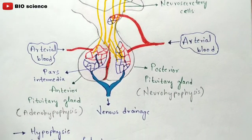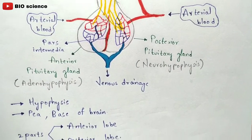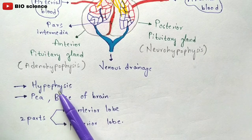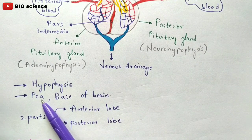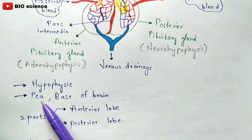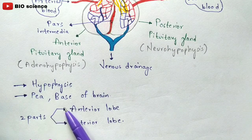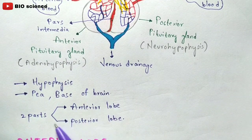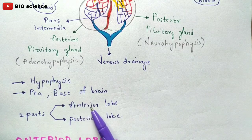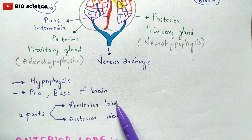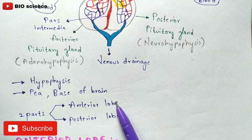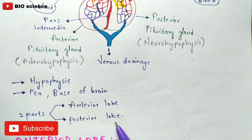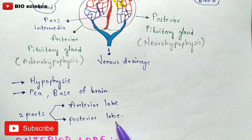This pituitary gland is also called hypophysis, and its structure resembles the letter P. It is present at the basement region of the brain and contains two parts: the anterior lobe, called the anterior pituitary gland or adenohypophysis, and the posterior lobe, called the posterior pituitary gland or neurohypophysis.